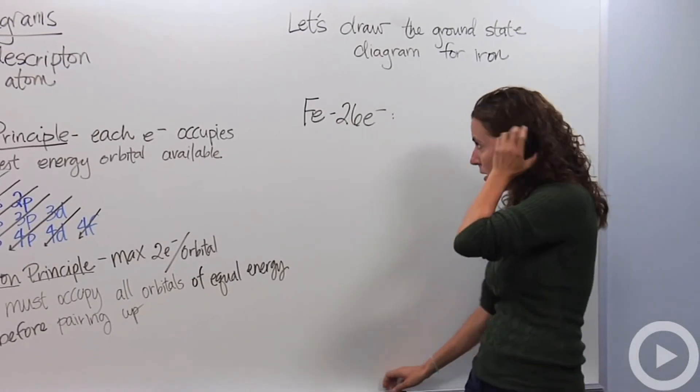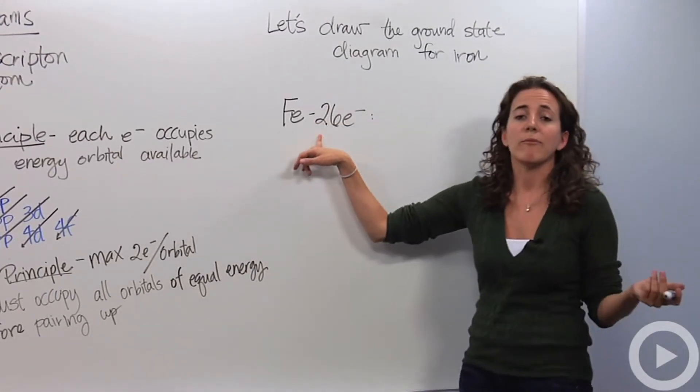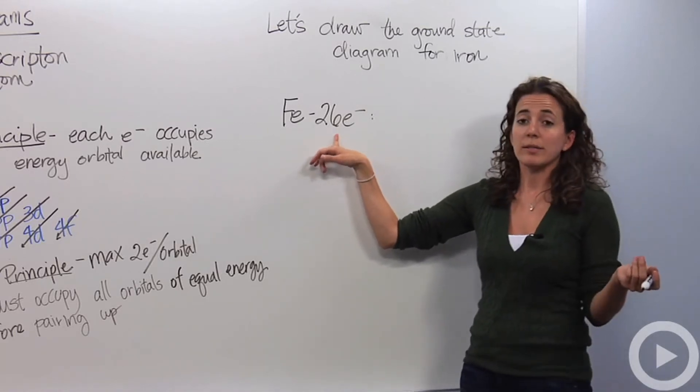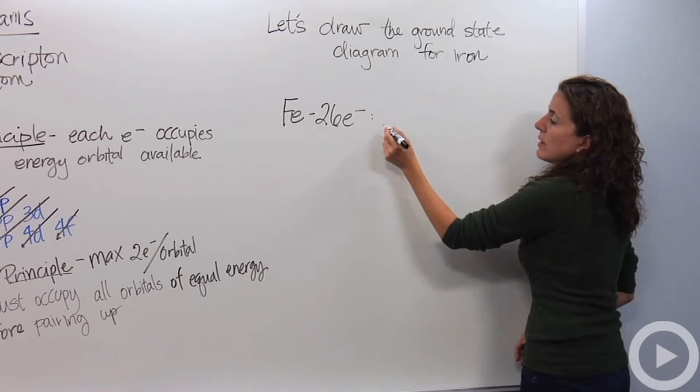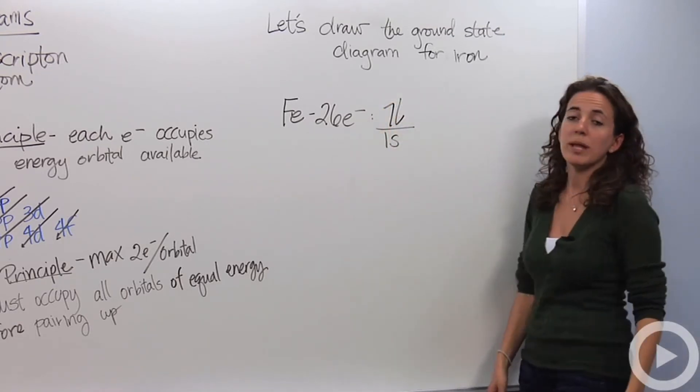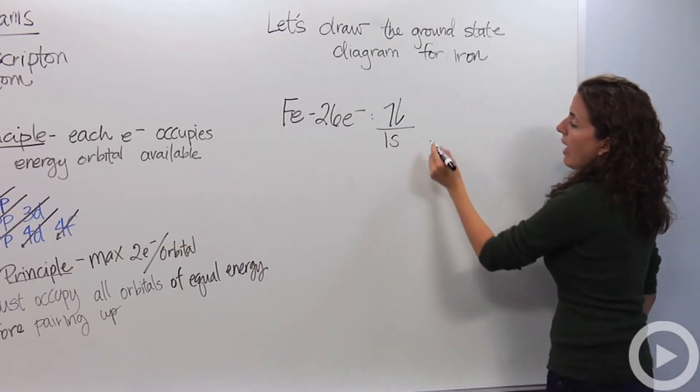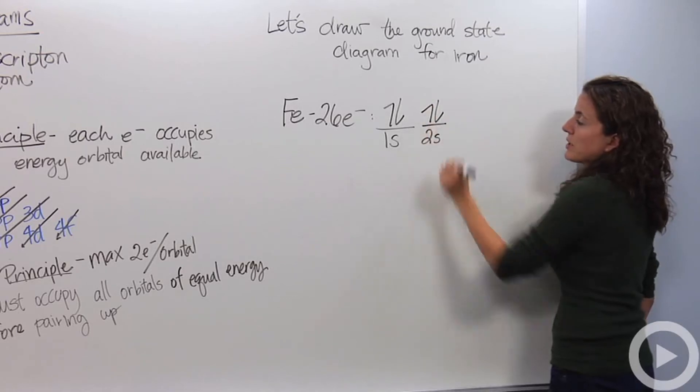So let's put all this stuff into play. How does this all come together? Let's do the orbital diagram for iron. Iron we know in its ground state has 26 electrons. So we know the first electrons are going to go into the 1s orbital. And we said two electrons can fall into the 1s orbital. After the 1s orbital is the 2s.